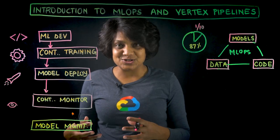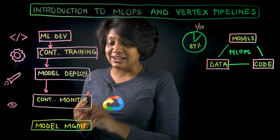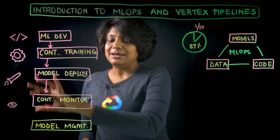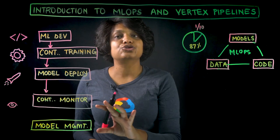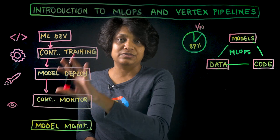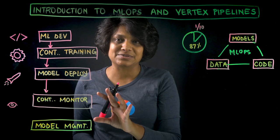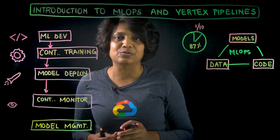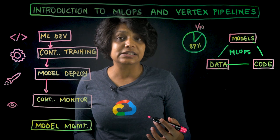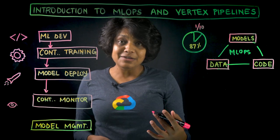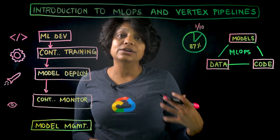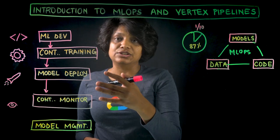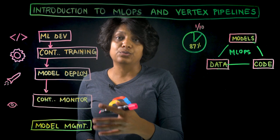Model management and governance is basically the step that applies to all of these steps — it's the entire framework. We need traceability, verifiability, and auditability at each stage of this workflow.